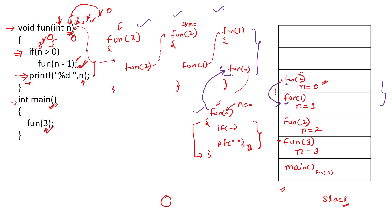Inside each function body there is a printf after the recursive call, because these recursive bodies are copies of the actual function. Returning to fun(1), the next line is printf, and n here is 1, so 1 will be printed. Then we return to fun(2), where n is 2, so 2 will be printed.